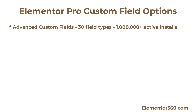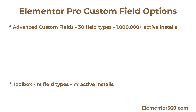There is a pro version which goes from $49 a year for one site to $249 a year for unlimited sites. Another option natively supported by Elementor Pro is Toolset. Toolset has 19 field types and is a premium-only option. Pricing goes from $69 a year for one site to $299 a year for unlimited sites.